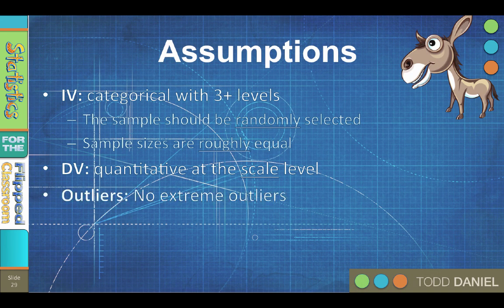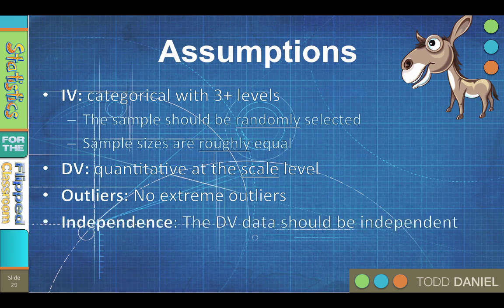Check for outliers in your data cleaning using the explore command. You should delete or Windsorize severe outliers. Scores in one group should not influence the probability of scores in another group. This is called independence. The participants in one group are in only one group. They are not in neither. They are not in both.